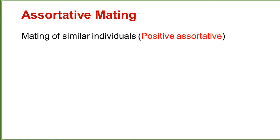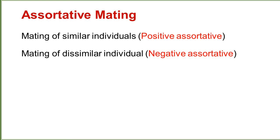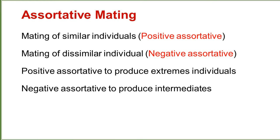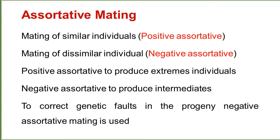Assortative mating is the mating of similar individuals. If the mating is of similar individuals it is called positive assortative; if of dissimilar individuals, it is called negative assortative. Positive assortative is intended to produce extreme individuals, while negative assortative is intended to produce intermediates — characteristics intermediate to both parents. To correct genetic faults in progeny, negative assortative mating is commonly used.